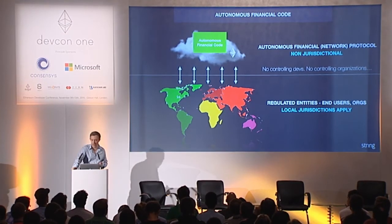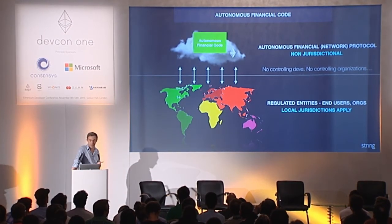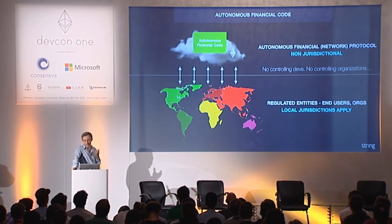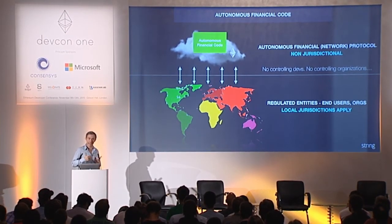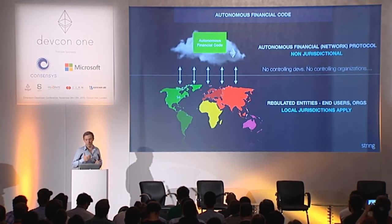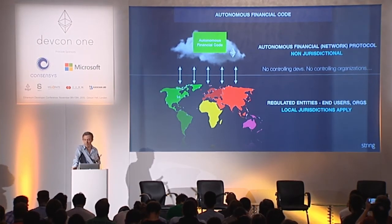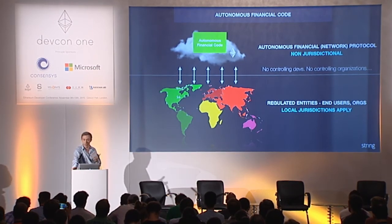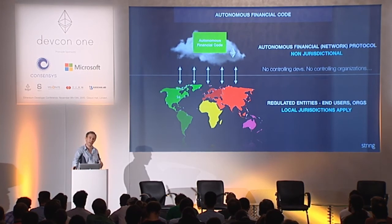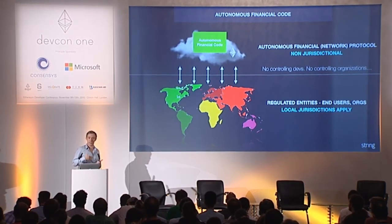Autonomous financial code must not be controlled by developers or organizations. It may have some voting shares to vote on logic, but cannot be controlled by any entity. It must exist as a network protocol in the cloud, with regulation falling on the entities that access it in local jurisdictions. That's the only way to create a global financial system — you can't subject it to the regulation of every country in the world.